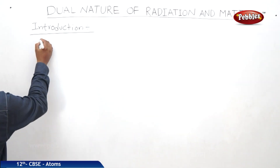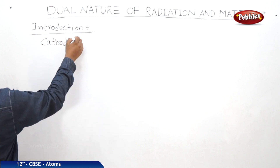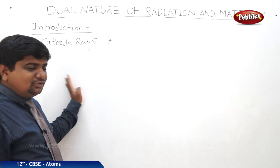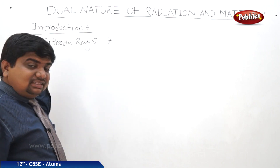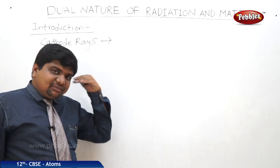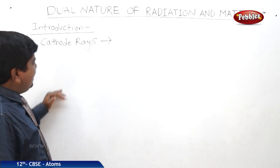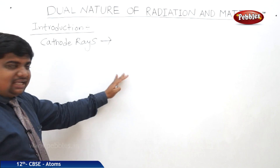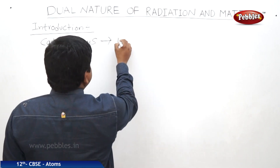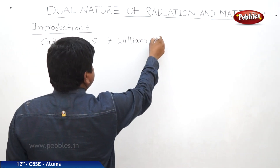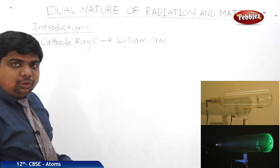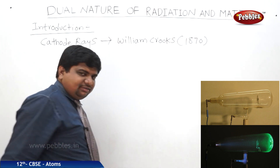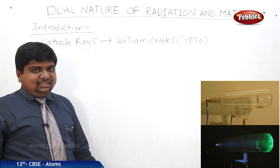The next major discovery is cathode rays — a milestone in physics, useful to understand atomic structure and nuclei. But the name of these rays was derived after the discovery of electrons. That is why I am writing cathode rays third. William Crookes is the scientist who discovered cathode rays in 1870, which is actually the first discovery when compared to J.J. Thomson's electron discovery.